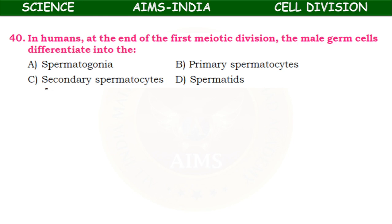In humans, at the end of first meiotic division, the male germ cells differentiate into — spermatogonia, primary spermatocytes, secondary spermatocytes, or spermatids? The answer is secondary spermatocytes. The meiotic division takes place in the testes, the male reproductive organ where male gametes are produced, and male germ cells differentiate into secondary spermatocytes.